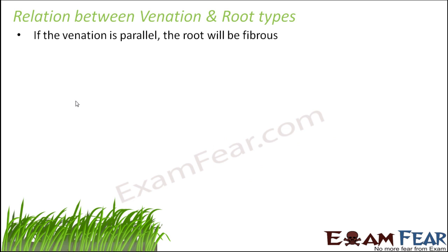We learnt that there are two types of venation: reticulate venation and parallel venation. When it comes to parallel venation, let's say this is the leaf — parallel venation means the veins will run parallel to each other, like this. You can see the veins are parallel to each other. That's parallel venation.